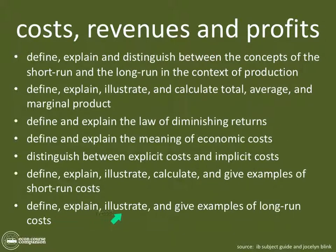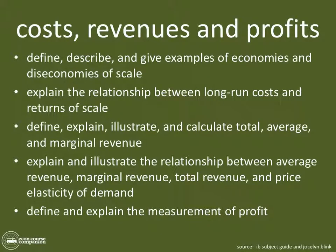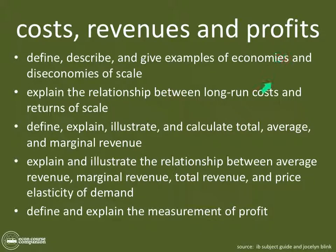Can you define, explain, illustrate, and give examples of long-run costs? Can you define and explain economies of scale in the long run, diseconomies of scale, and the relationship between long-run costs and returns to scale? Remember: economies of scale happen as costs go down, then they go constant, then they go up — and this is where firms experience diseconomies of scale. If that doesn't make sense, go check out the video on long-run costs.